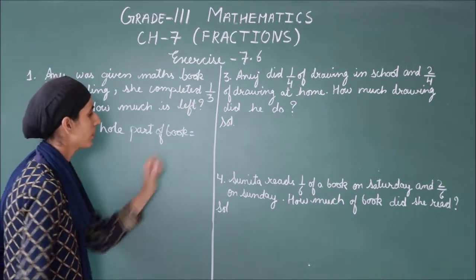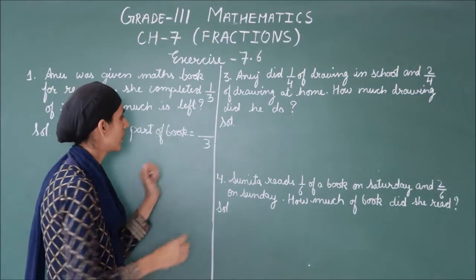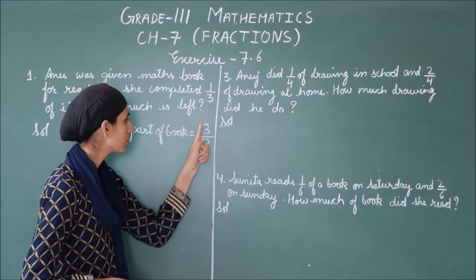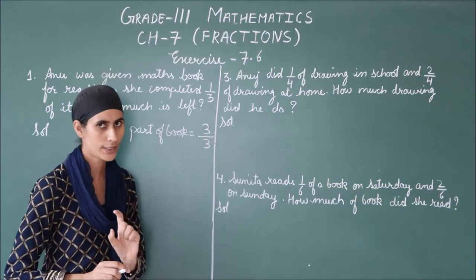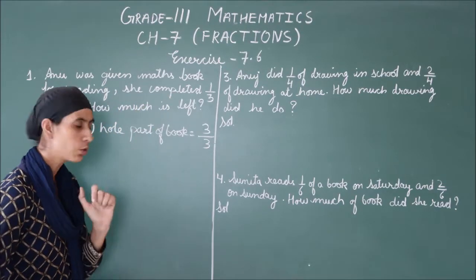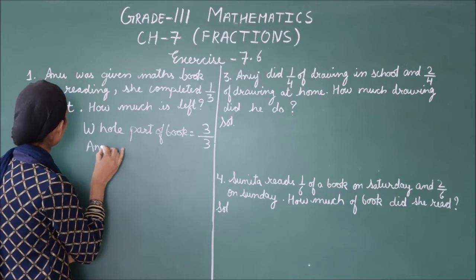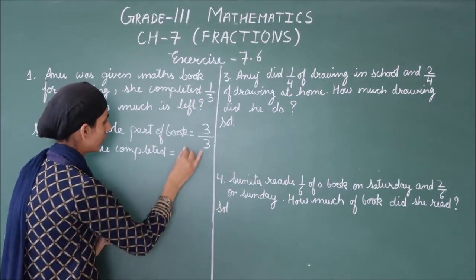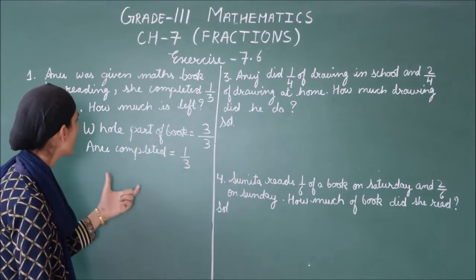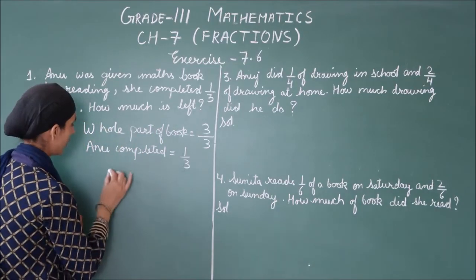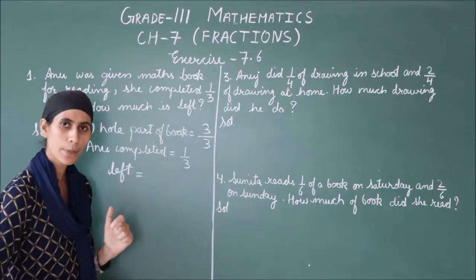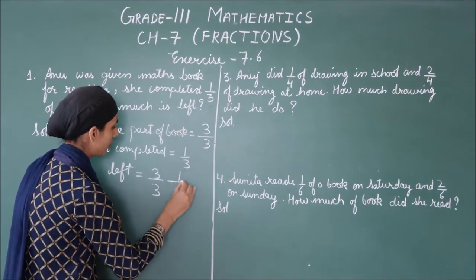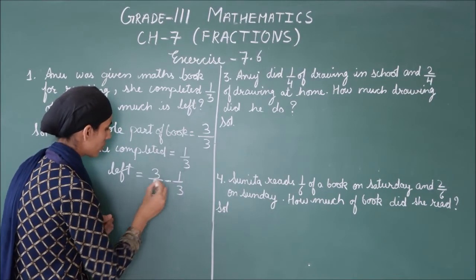So, what do we have in the fraction? Three parts. To make the whole, we place the same number from the denominator into the numerator — 3 by 3 — which represents the complete maths book. Now, the completed part is what Anu has read: 1 by 3. To find what is left, as I told you, we subtract. From the whole part, we subtract the part Anu has completed: 3 by 3 minus 1 by 3.